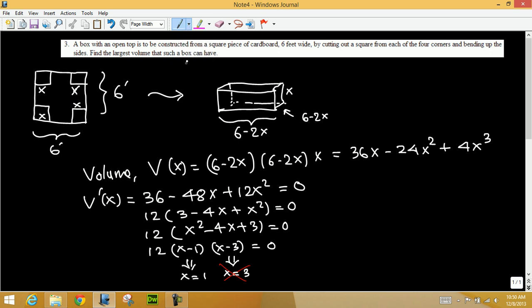Now we need to make sure X equals one maximizes this volume function. Again, we can do the second derivative test. Let's find the second derivative. The first derivative was 36 minus 48X plus 12X squared. When we find the derivative, this is zero minus 48, so minus 48 plus 24X.